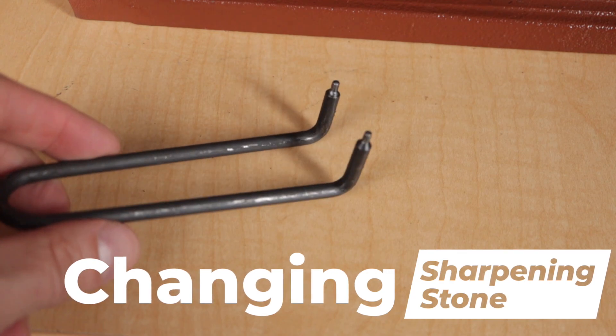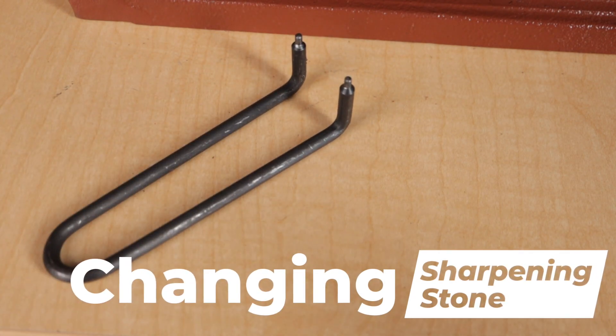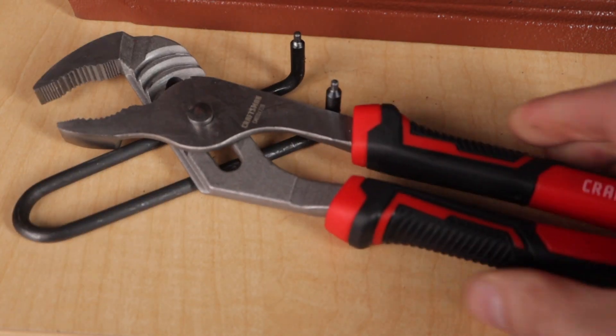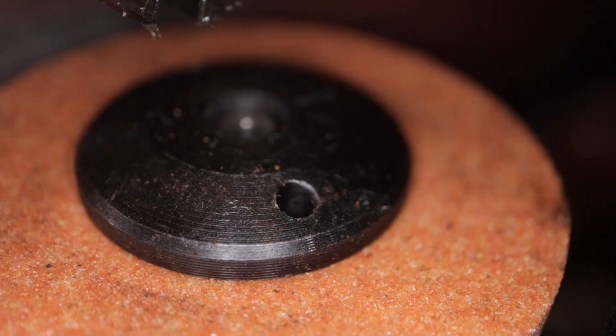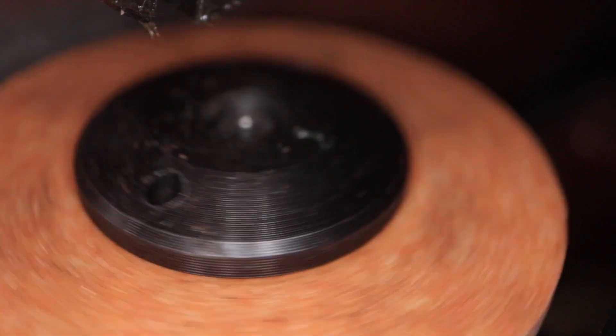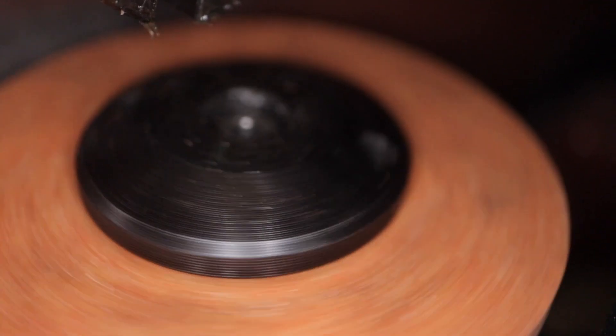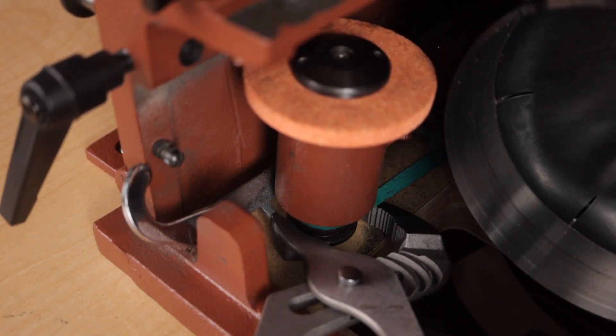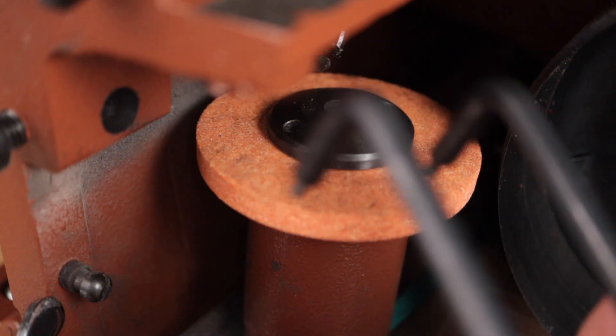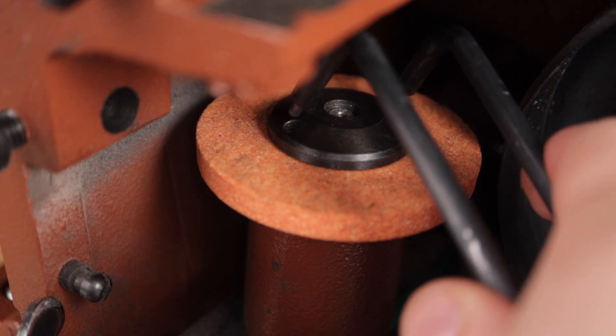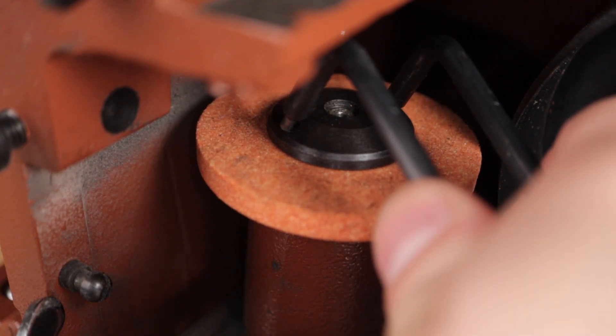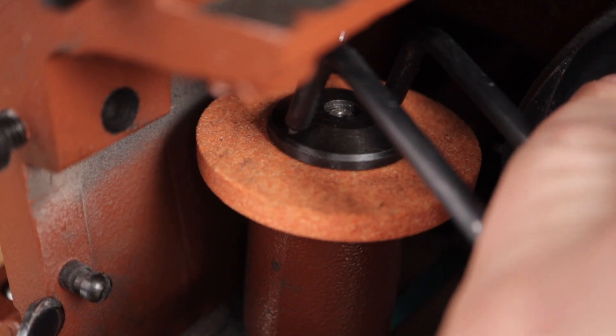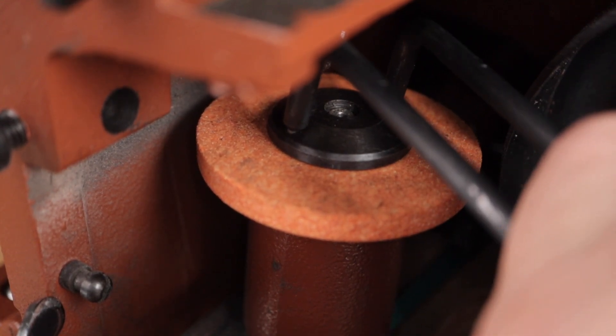You'll need the grindstone nut spanner and some channel locking pliers. The top nut has two holes and that is where the grindstone nut spanner will attach to and help remove the nut. Use the channel locks to grab and hold the grindstone shaft pulley. Now unscrew the top set screw nut and be very careful with your hands and the open blade. This set screw nut is reverse thread.